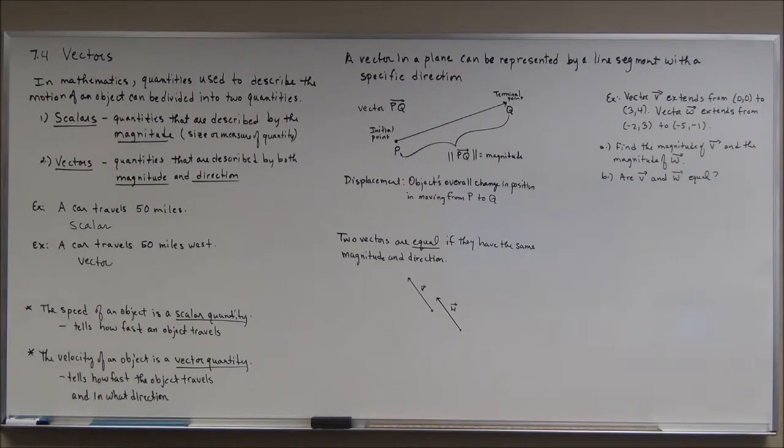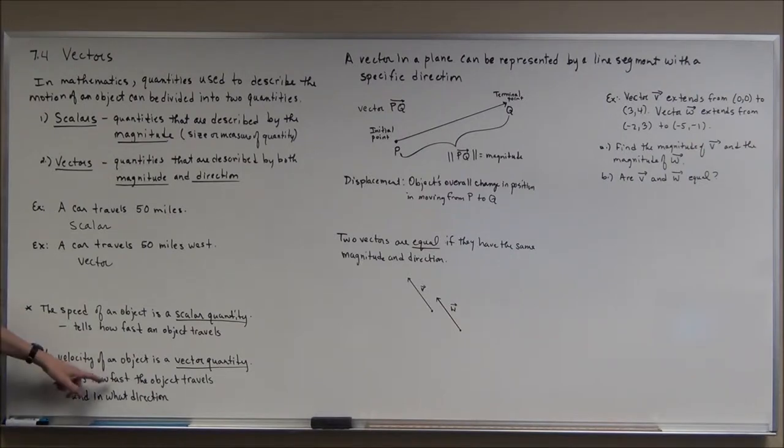The speed of an object is a scalar quantity. I always tell people that speed is the absolute value of velocity - it doesn't give direction, just the magnitude to tell us how fast an object travels. Whereas the velocity of an object is a vector quantity because it tells us not only how fast but also what direction.